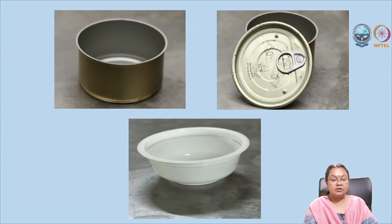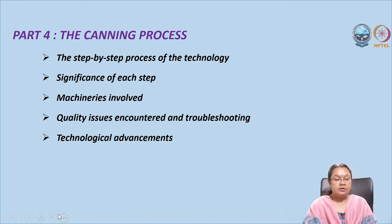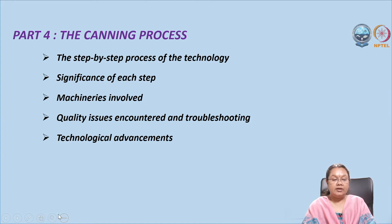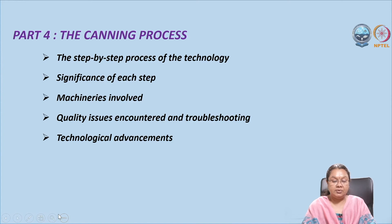This picture shows the different cans and materials that can be used for canning. In part four on the canning process, we will discuss the step-by-step technology, the significance and importance of each step, the different machineries involved, quality issues and troubleshooting that may arise during the process, and the advancements that have happened in the canning process.